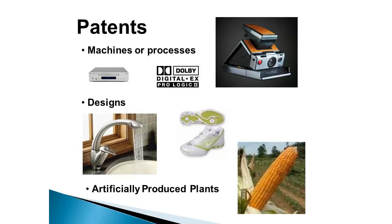The first type of intellectual property is the patent. Patents are issued by the US government and protect three main types of things. First, they can protect machines or processes. For example, the original Polaroid camera — the first camera that took pictures you could instantly see — was patented. CD players, VHS players, DVD players, and Blu-ray players are all things that can be patented.